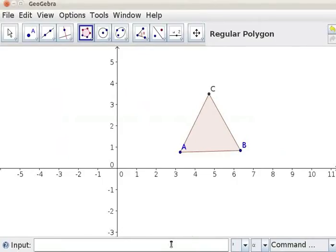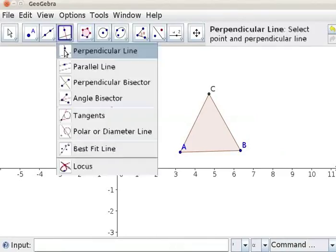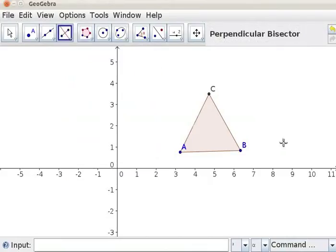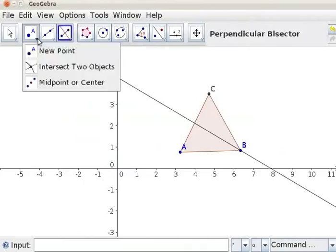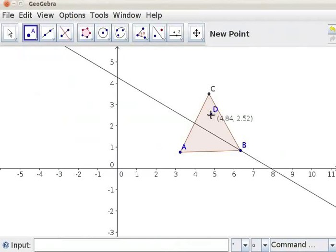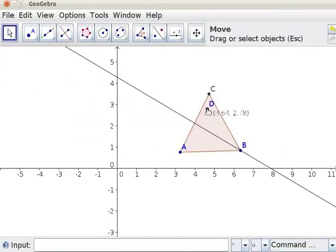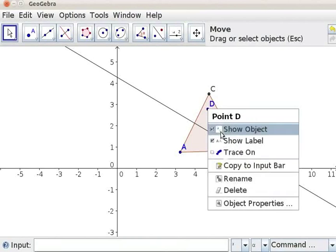Let us draw a perpendicular bisector to one of the sides of the triangle. Select Perpendicular Bisector tool and click on side AC. Select the Point tool and create a point inside the triangle. Move the point D towards one of the vertices. Right-click on point D and select Trace ON.